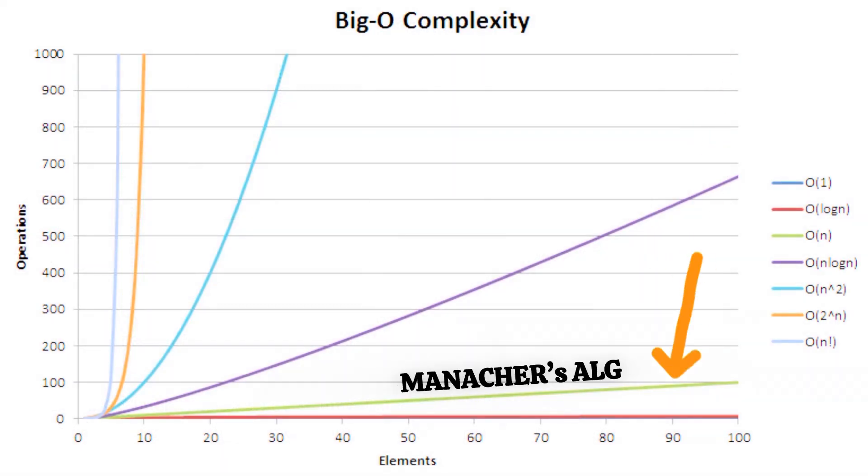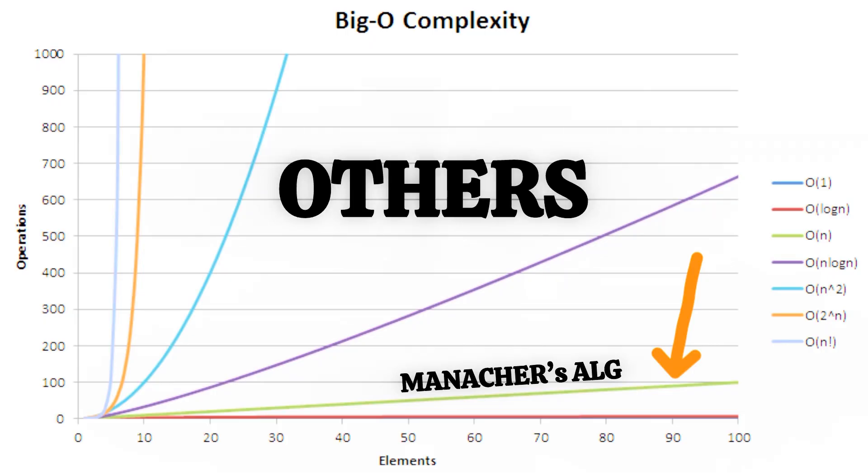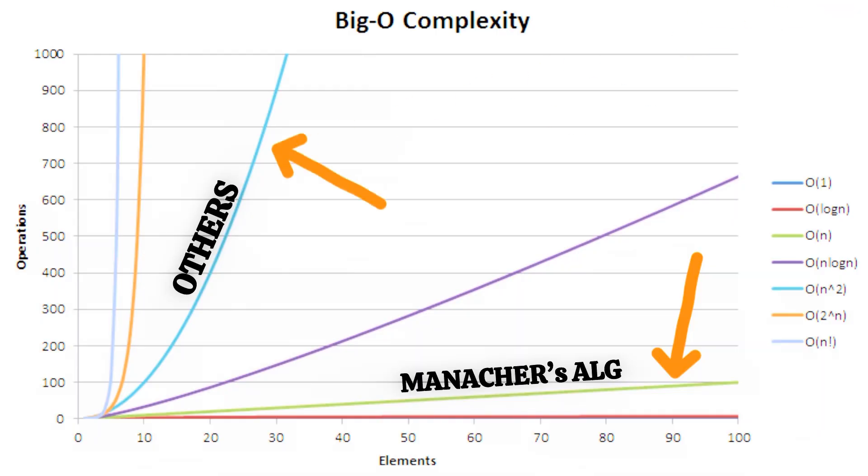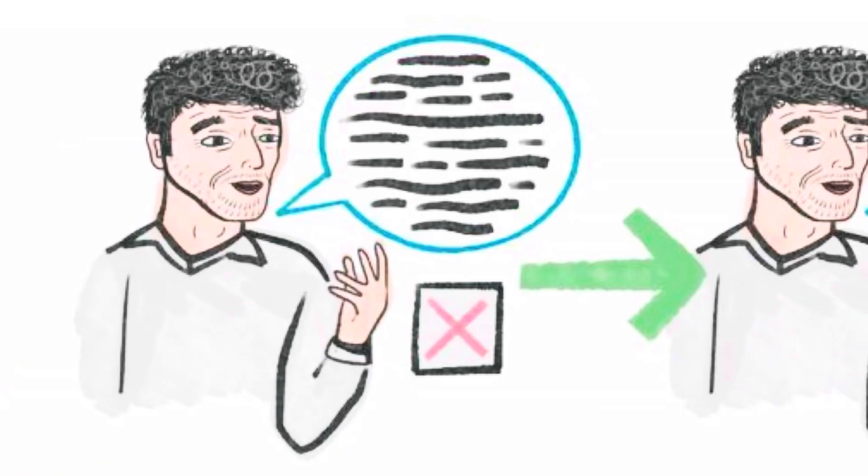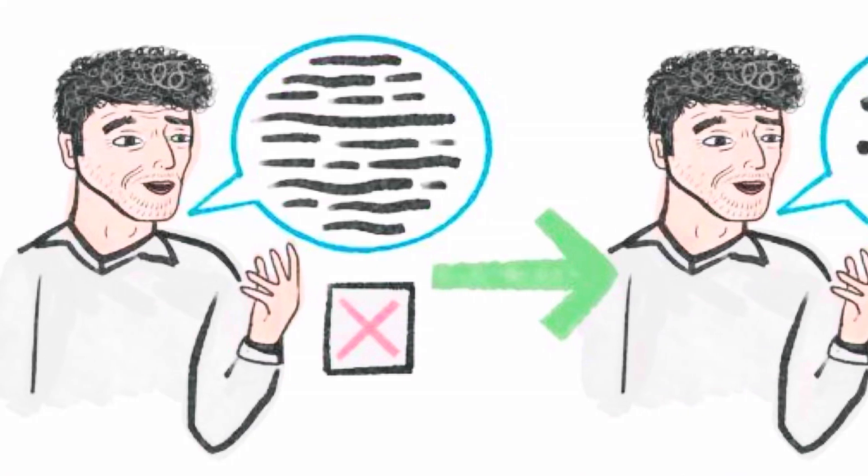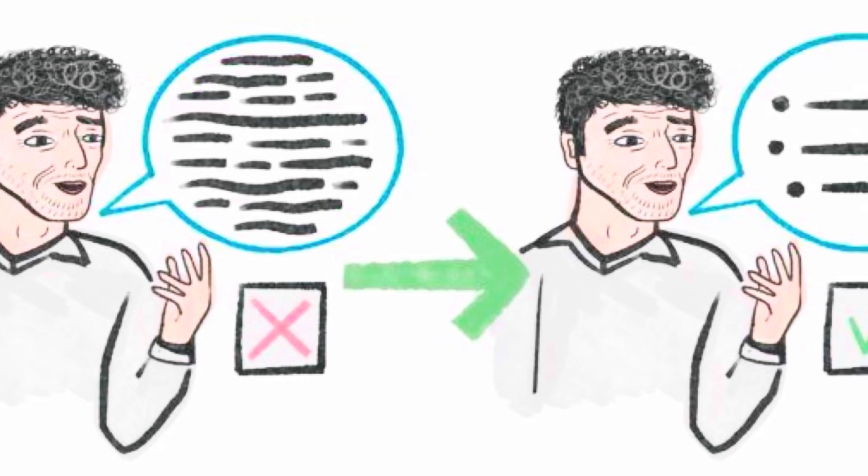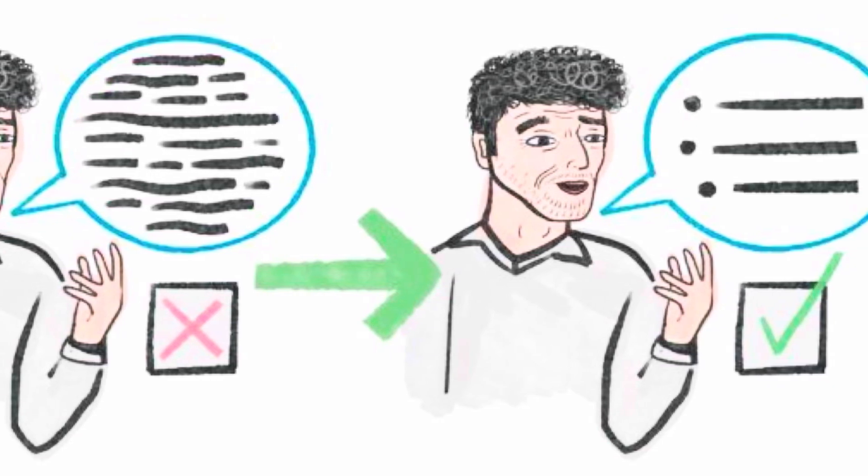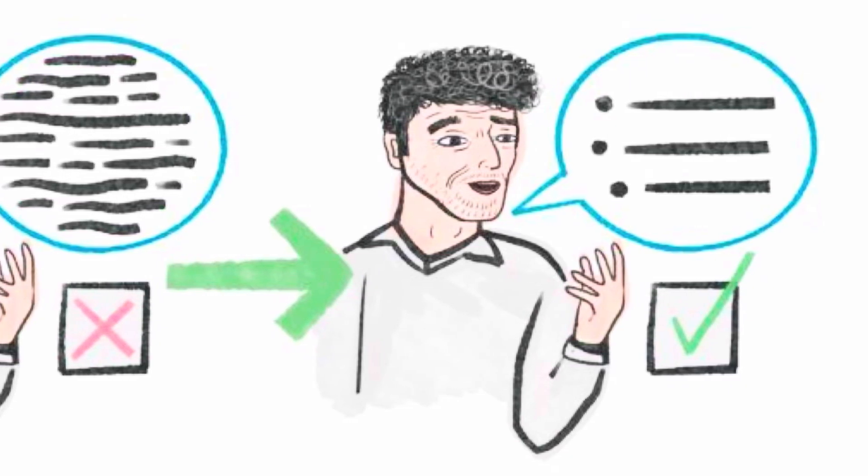That's such a big deal, because most naive or even dynamic programming approaches take O(n squared) time. So today I will explain it with easy to understand examples and logic that actually makes sense. Let's break it down clearly, step by step.